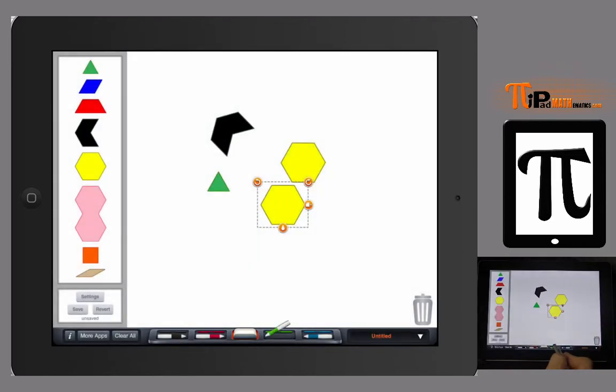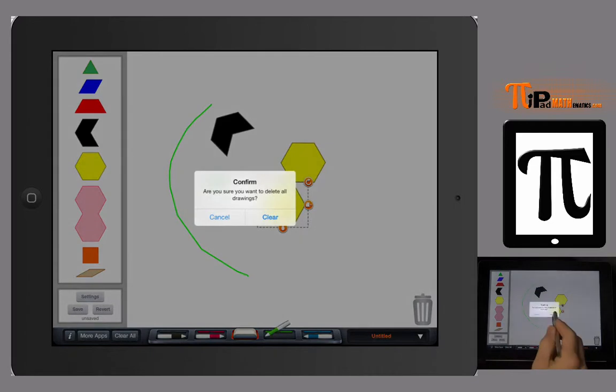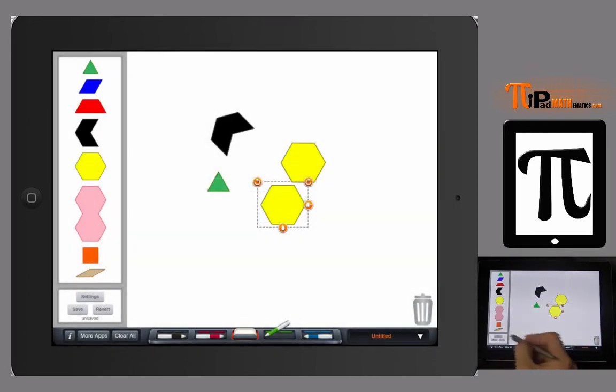We can also grab the pins down at the bottom, which are like your smart board pins, and we can write on it. We can erase the last thing drawn, or we can click and hold and clear all of the drawings. Same thing with the shapes themselves—it'll keep writing whenever you have the pen up.